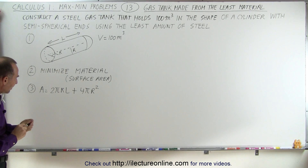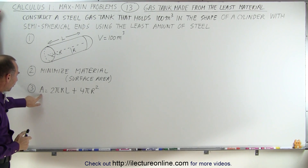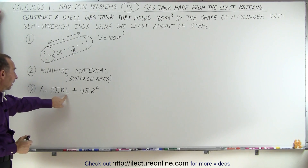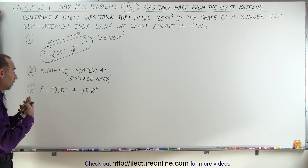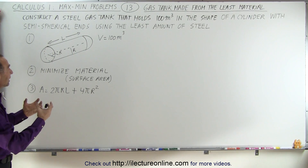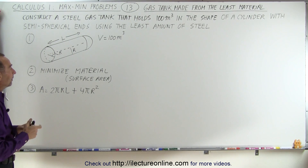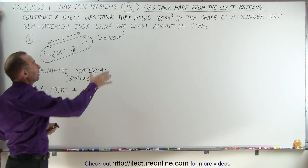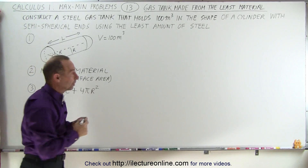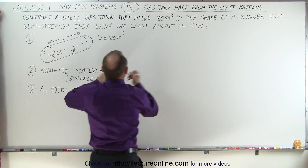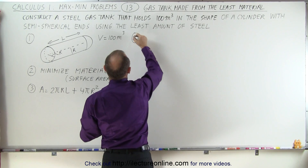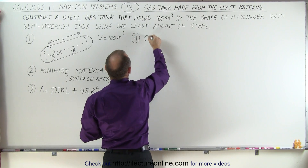Notice now that the equation for the surface area has two variables in it, both r and l. So we have to eliminate one of those variables, which means we need a constraint. And the constraint, of course, is that the volume must be 100 cubic meters. So step four is to find a constraint.